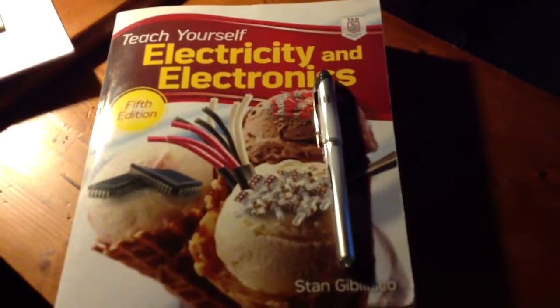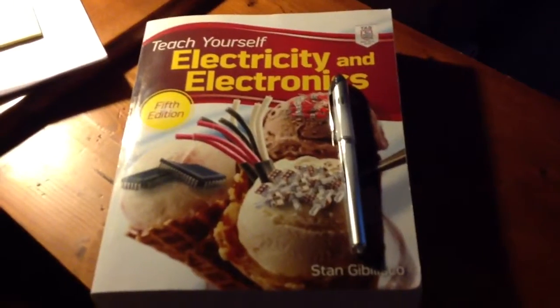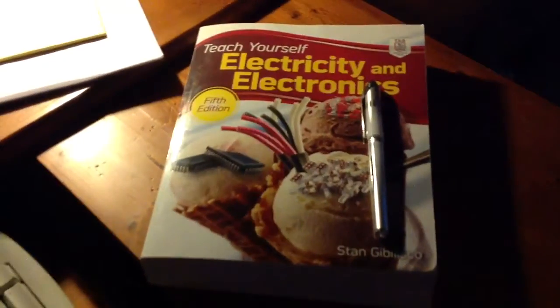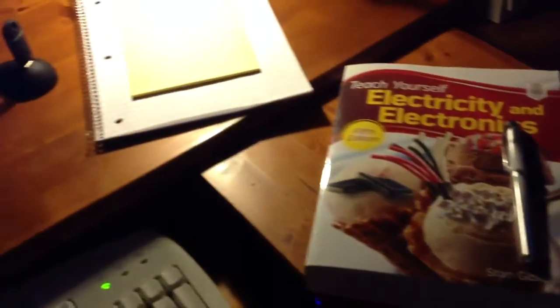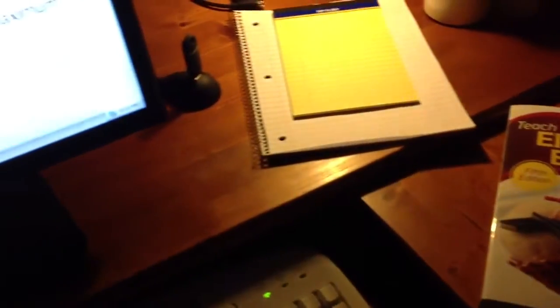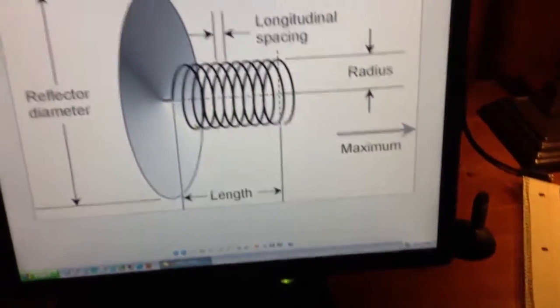The question asks us what type of antenna would best serve the purpose for a radio direction finding apparatus at 1.5 gigahertz.